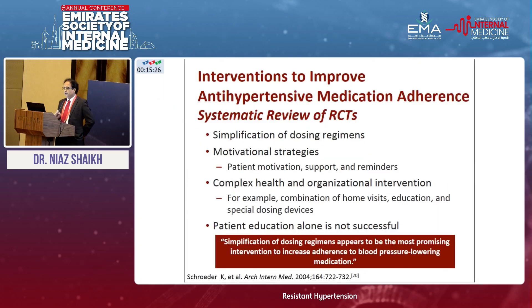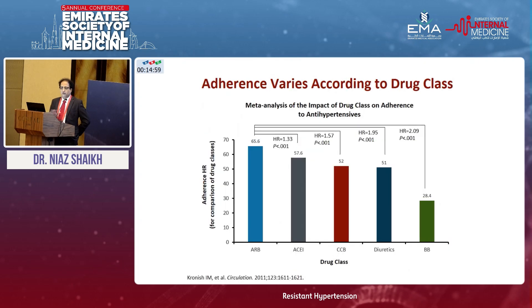There are different ways to improve adherence, but the most important thing is simplification. Simplification of the dosing regime appears to be the most important intervention physicians can do to improve adherence to blood pressure medications. Adherence varies according to different groups of blood pressure medications — ARBs and ACE inhibitors have very good tolerability, while adherence is less with beta blockers and diuretic therapy.